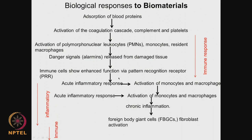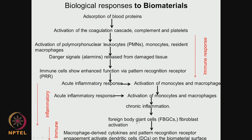Then comes the inflammatory things — you are going to have acute inflammatory response. Activation of monocytes and macrophages, then chronic inflammation happens after the acute. And then you get foreign body giant cells and fibroblast activation. Finally, macrophage-derived cytokines and pattern recognition receptor engagement activate dendritic cells, which all start accumulating on the biomaterial. So again immune response takes place. We have the immune response to start with, then inflammation — acute and chronic — and then again the immune response: foreign body giant cells forming, fibroblast activation, macrophage-derived cytokines. All these things start happening as the material is placed inside the system.